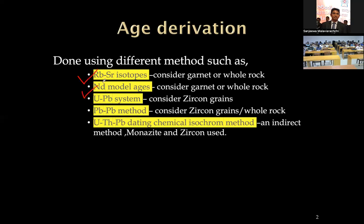We have the uranium-lead system, which is extensively used because we use zircon grains. This uranium-lead system is widely used and a very reliable method to determine absolute ages of rocks. We call these absolute ages because there is also a relative age concept — relative age gives a relative timing, for example if you have one rock layer intruded by a dike.